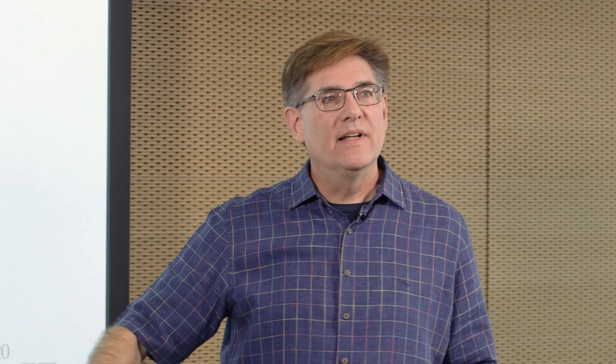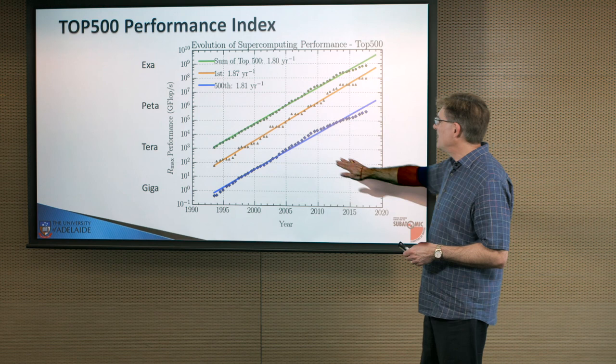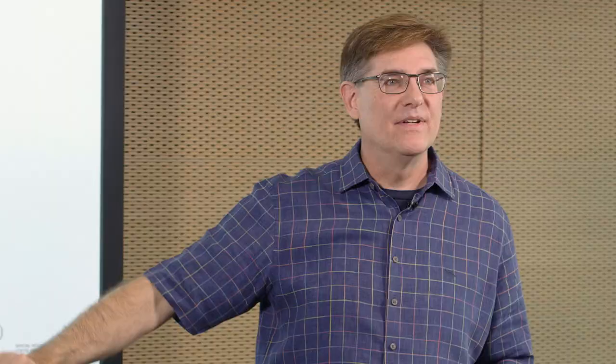Now, it would be lovely to be number one. But to be in the top 500 list, you need to pay attention to the 500th. And here it is in blue. If you want to be in the list, you've got to be above this curve. The other thing that we like to look at is the sum of all of the computers between the first and the 500th. And that's plotted here as the green line.